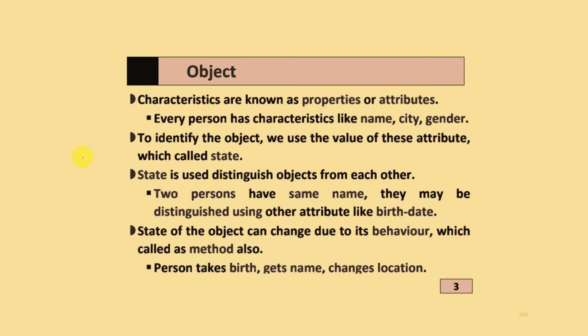Characteristics are known as properties or attributes. Every person has characteristics like name, city, gender, and birth date. To identify the object, we use the value of these attributes, which is called state.